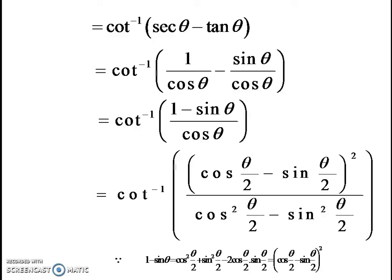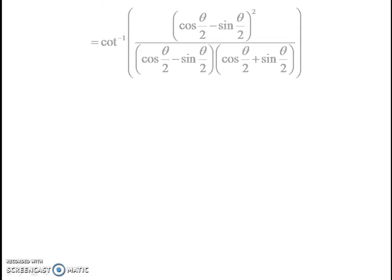The denominator is cos theta. Applying the identity cos 2 theta equals cos squared theta minus sin squared theta, cos theta can be written as cos squared theta by 2 minus sin squared theta by 2. Using the algebra a squared minus b squared equals a plus b times a minus b, the denominator becomes cos theta by 2 minus sin theta by 2 times cos theta by 2 plus sin theta by 2.